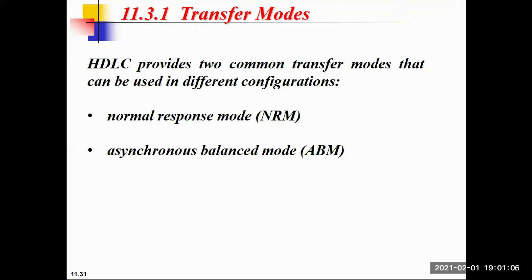HDLC provides two common transfer modes used in different configurations. The first is NRM, that is Normal Response Mode, in which stations activate into normal response mode. The second is ABM, that is Asynchronous Balance Mode, in which stations activate into asynchronous balance mode.